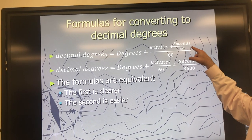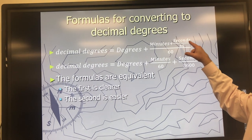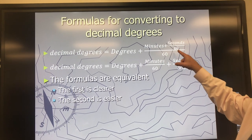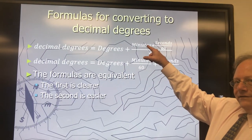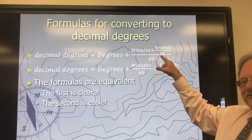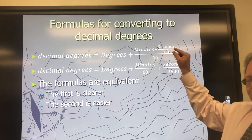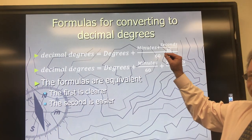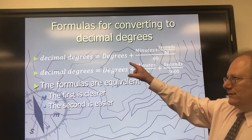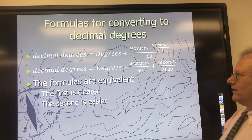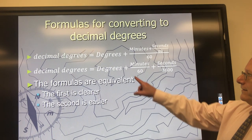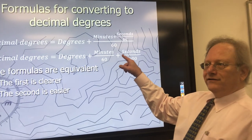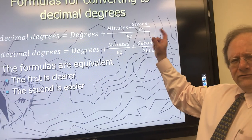If you take the seconds and divide them by 60, that converts those seconds into fractions of a minute. If you add that to the minutes, and then divide the whole thing by 60, that converts those minutes to a decimal fraction of degrees. And if you add that to the degrees, you end up with decimal degrees. The second formula is mathematically equivalent — it's easier to calculate, but it's less transparent in terms of what you're doing.